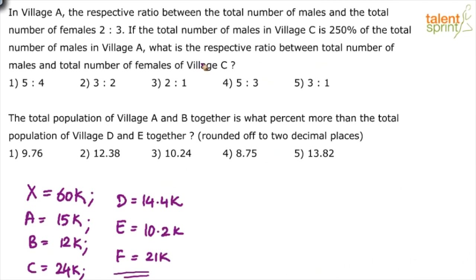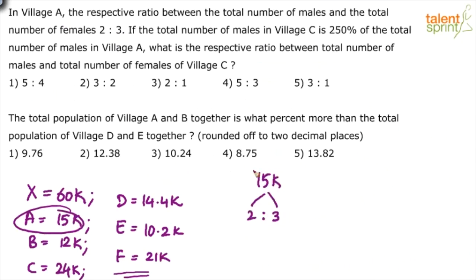In village A with 15,000 population, the ratio of males to females is 2:3. That's 5 parts total, and 15,000 divided by 5 is 3,000 per part. So males in A are 6,000 and females are 9,000. Males in village C are 250 percent of males in village A, which is 2.5 times 6,000, giving 15,000 males in village C.